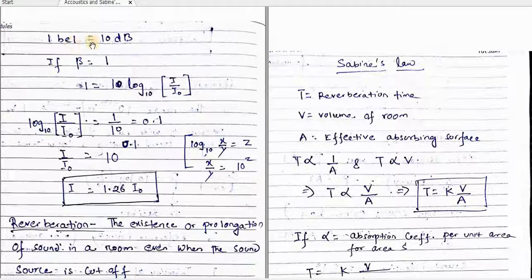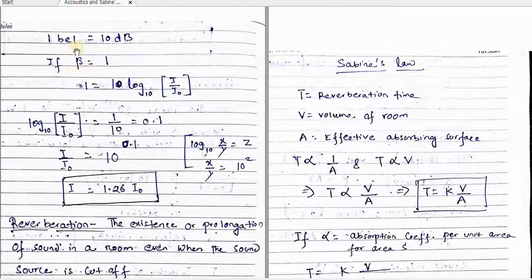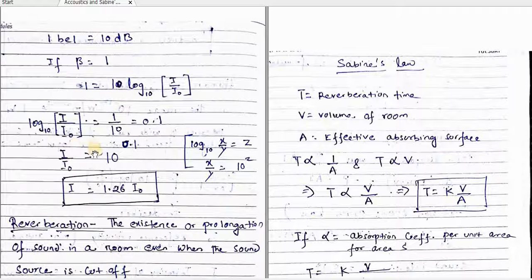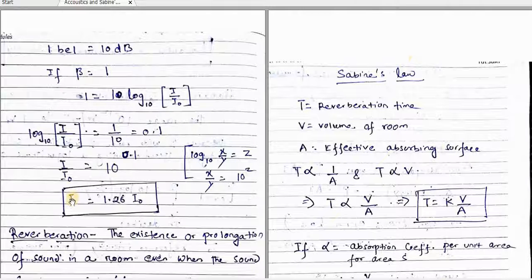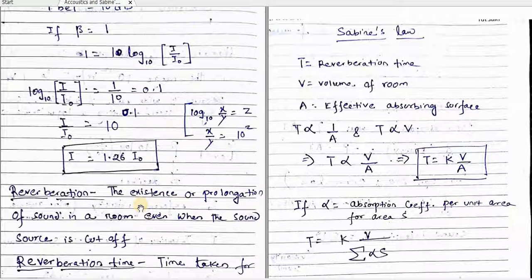Next comes: what is the relation between bel and decibel? One bel is equal to 10 decibel. And if beta, which is the sound level, equals 1 bel, then 1 is equal to 10 log base 10 of I by I0. In this way, I is equal to 1.26 times I0. This is the relation between I and I0.